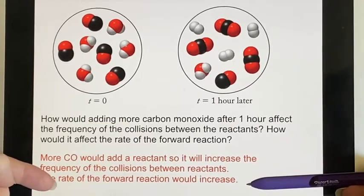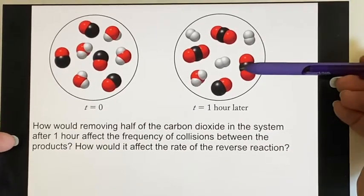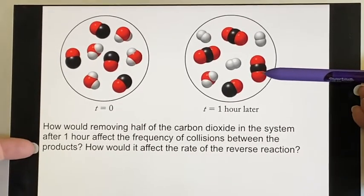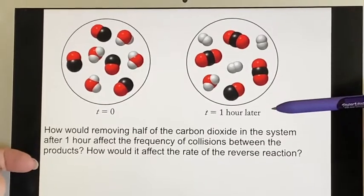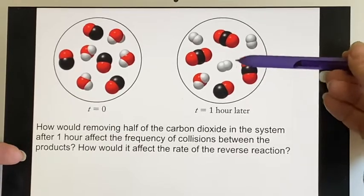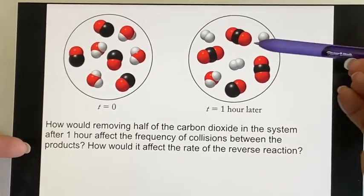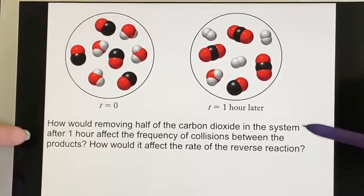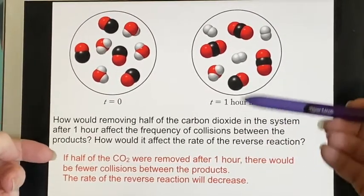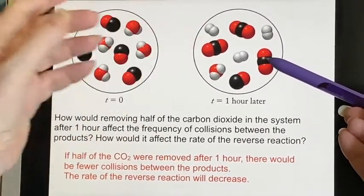If I removed half of the carbon dioxide in the system after an hour, how would that affect the frequency of the collisions between the products, and then how would it affect the rate of the reverse reaction? Well, the reverse reaction would be based on the concentration of hydrogen gas and carbon dioxide. And so if I removed some of the carbon dioxide, there would be fewer of them to hit each other and the rate of the reverse reaction would go down. So you see, we can very sneakily do this, and that would cause this reaction to say, oh, I need to produce more of the carbon dioxide.